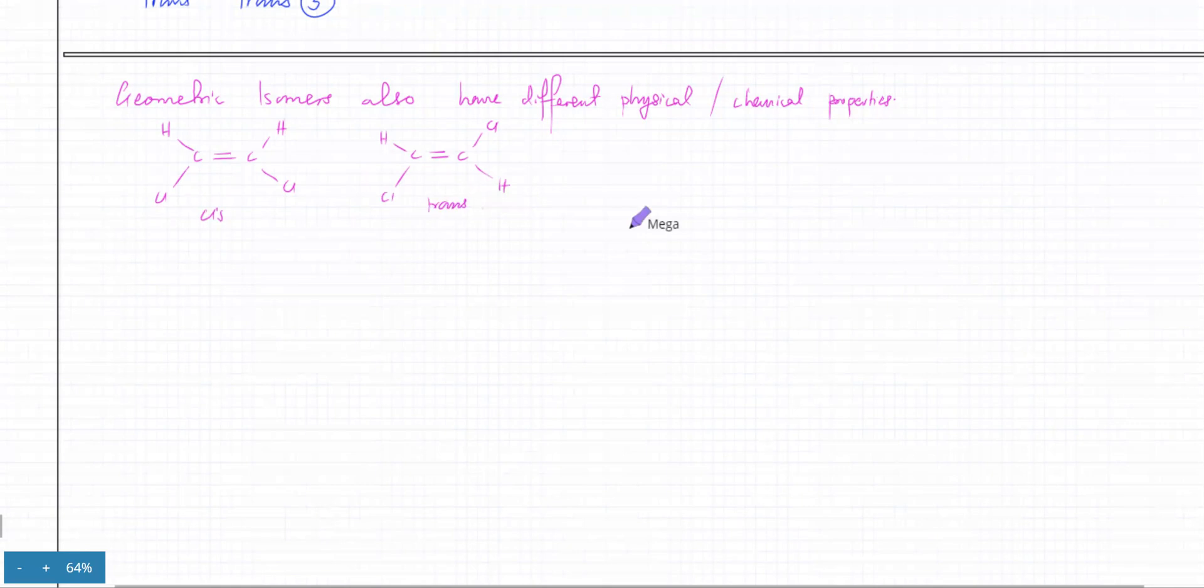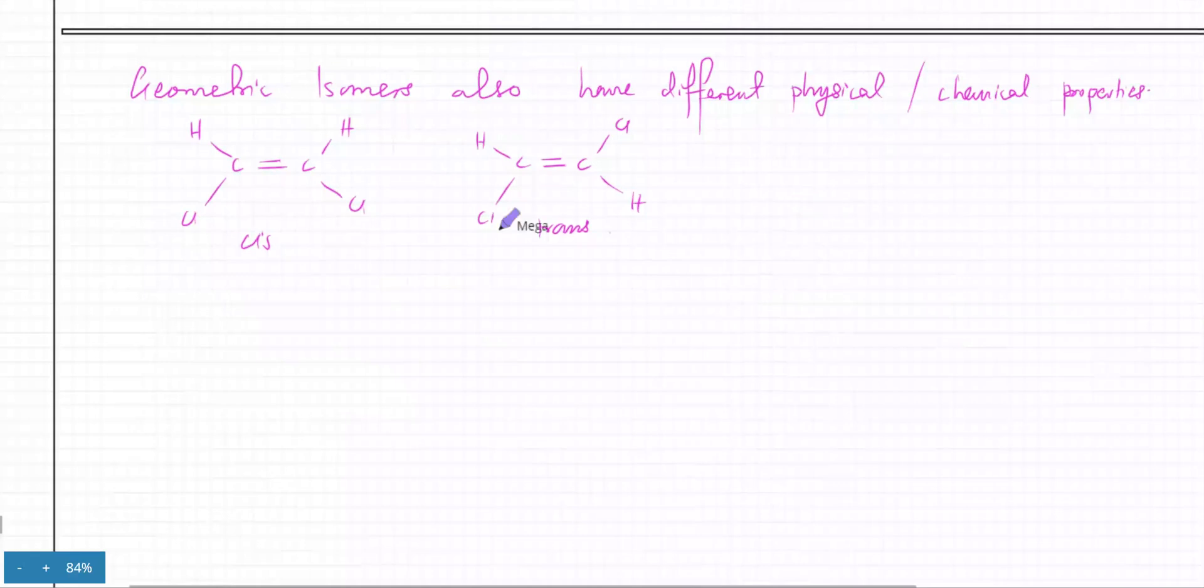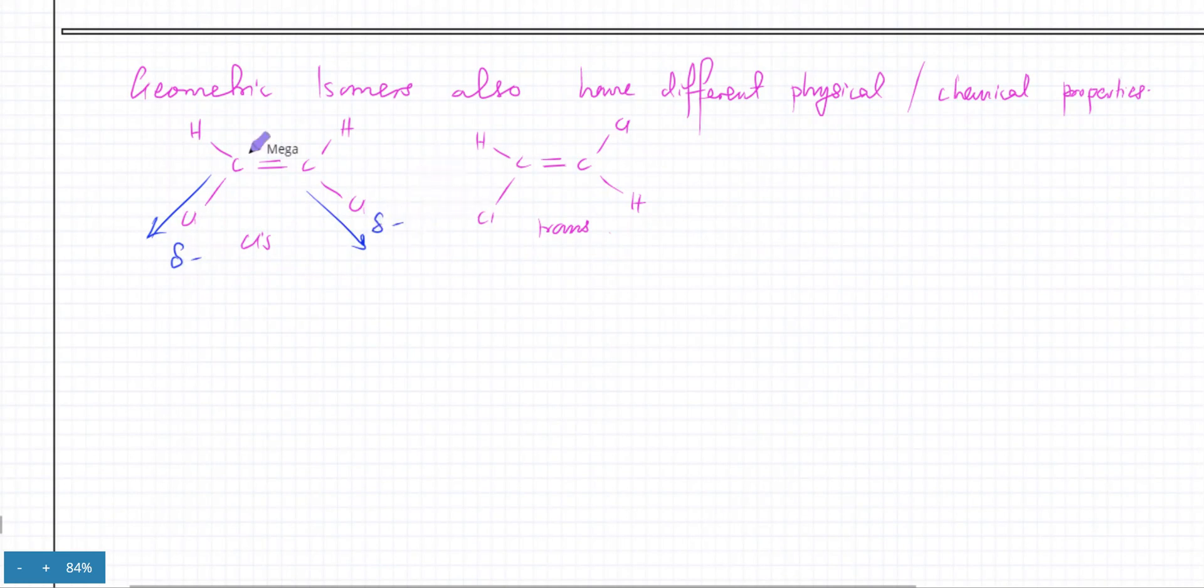they're going to have different physical and chemical properties? Which one is polar and which one is non-polar out of the two? The cis is actually polar. The cis molecule is polar because the electronegative elements are both pointing in the downward direction. Exactly. So the bottom part would be partial negative and the top part would be positive. What happens over here? The effect cancels out, so the dipoles cancel out.